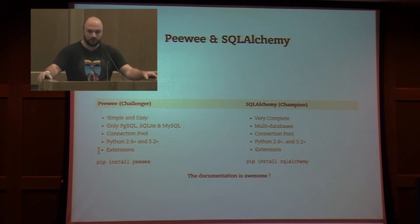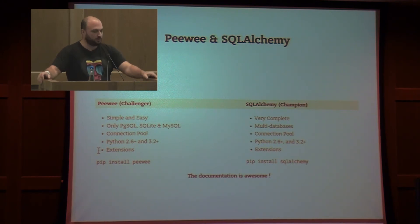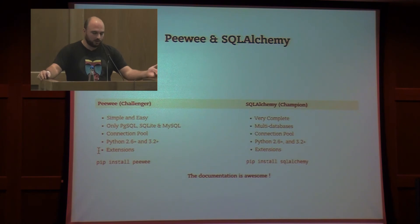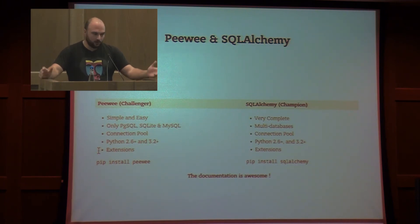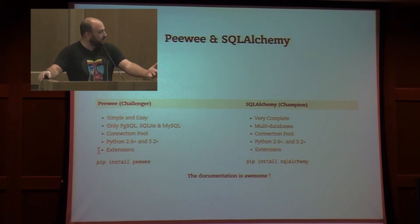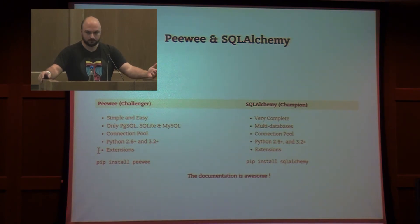PeeWee is simple and easy — about two thousand lines of code. There is a connection pool. It supports Postgres, MySQL, and SQLite. You can also have extensions. To install it, just pip install peewee. For SQLAlchemy, the champion — really complete, really, really complete. If you want to print the PDF documentation, prepare your printer — you'll need about one thousand sheets of paper.